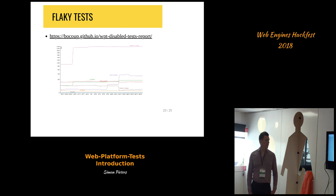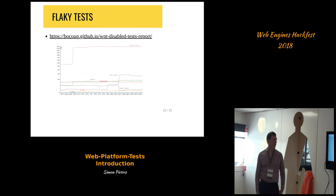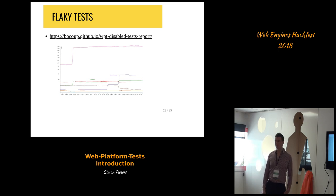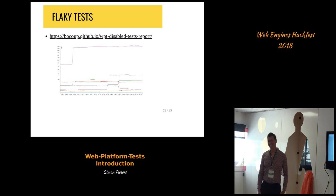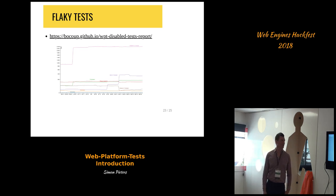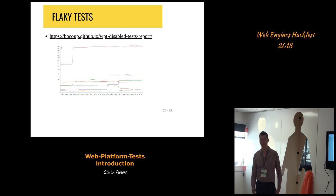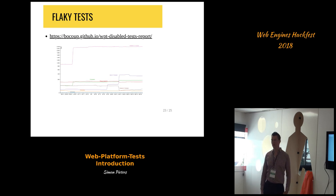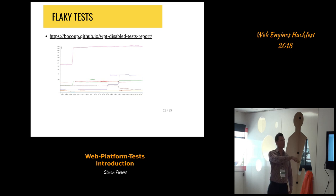I created a graph showing the number of flaky/disabled tests over time. It's not really going down, but the number of total tests is increasing. It would be nice if everyone tried to make the graph go down.